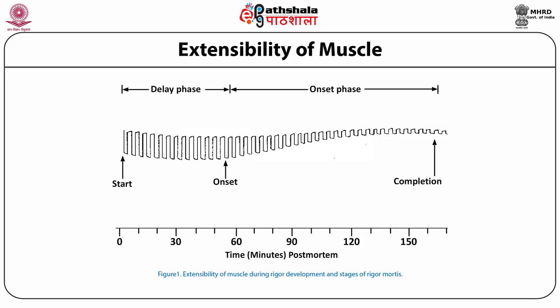Animals slaughtered under commercial conditions will typically have a much shorter delay phase or even an absence of the delay phase. The time course of rigor mortis is extended two to three fold at 10 degrees Celsius versus the 37 degrees Celsius body temperature.